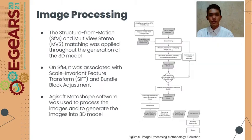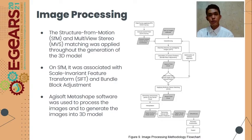For image processing, structure from motion and multi-view stereo matching were applied throughout the generation of the 3D model. Structure from motion was associated with Scale-Invariant Feature Transform (SIFT) and bundle block adjustment. The software AGISOFT Metashape was used to process the images and generate the 3D model.